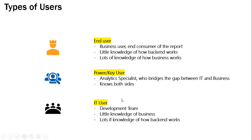They can help you in interacting with end users, understanding the features that users want, and then conveying this to the technical team. And then we have IT users — that is nothing but the technical team, you or me, who will be developing all these things. The IT team normally has little knowledge of business but complete knowledge of how the backend works. They work with power users or sometimes with end users and develop the objects which get consumed by end users.